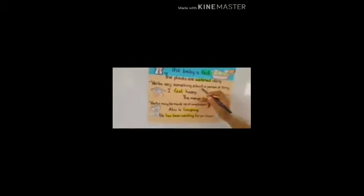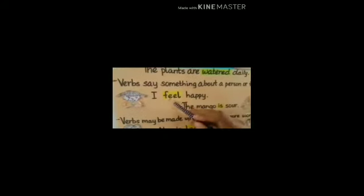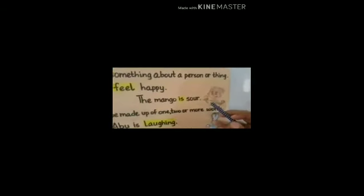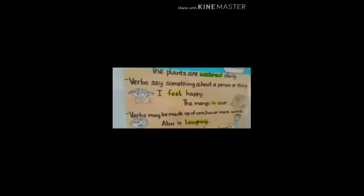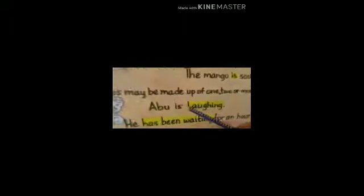Verbs also say something about a person or thing. I feel happy — what is happening with this girl? She feels happy. The mango is sour — this boy is holding a mango in his hand; the mango is sour. Over here, 'is' is a helping verb. Verbs may be made up of one, two or more verbs. For example, Appu is laughing — here 'is' is the helping verb and 'laughing' is the action that dad or Appu is doing.